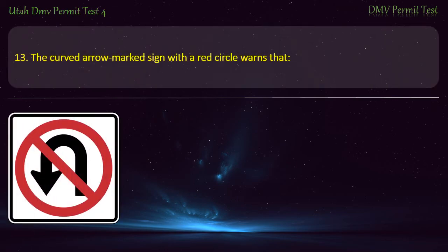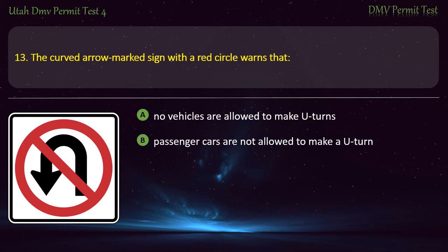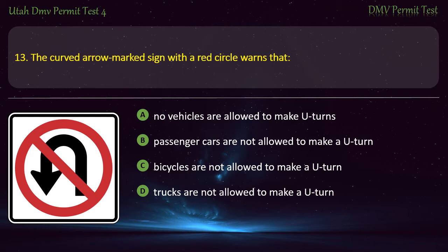Question 13. The curved arrow marked sign with the red circle warns that: No vehicles are allowed to make U-turns; Passenger cars are not allowed to make a U-turn; Bicycles are not allowed to make a U-turn; or Trucks are not allowed to make a U-turn? Answer: No vehicles are allowed to make U-turns.